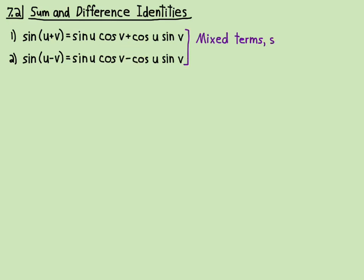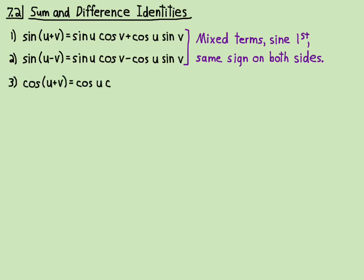Sine cosine is what we call a mixed term — a term that has one factor that's a sine and one factor that's a cosine. So the sine sum and difference identities have mixed terms. The sine comes first, and it's the same sign on both sides. Now the cosine is a little different — the cosine uses non-mixed terms.